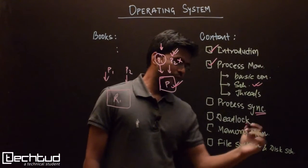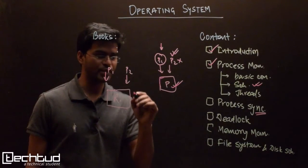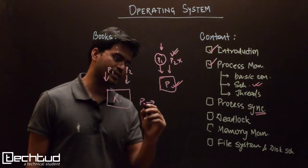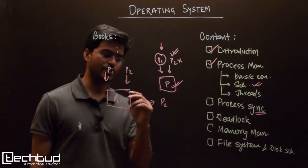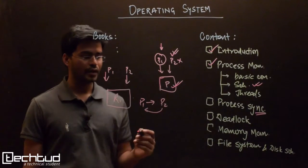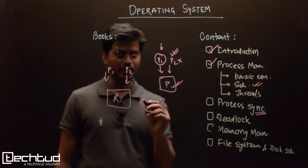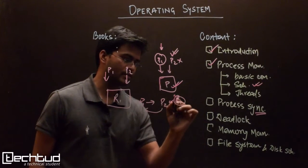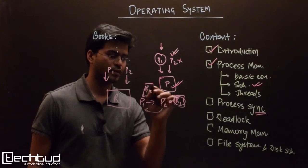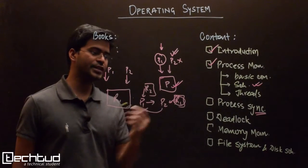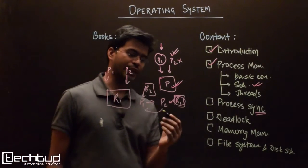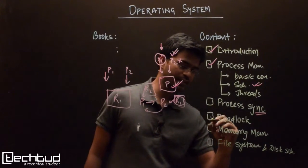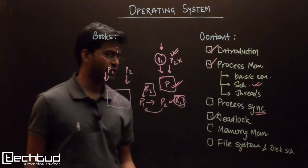Under process synchronization we will understand the critical section concept and various solutions for process synchronization. Then there comes deadlock. A single resource can be used by multiple processes, and if multiple processes form a chain of waiting — say P1 is waiting for P2 to release a resource R1, and P2 is waiting for P1 to release resource R2 — both are waiting for the other to release, and neither is quitting. That chain of infinite waiting is called deadlock. We will study different deadlock resolution mechanisms and measures to avoid deadlock.